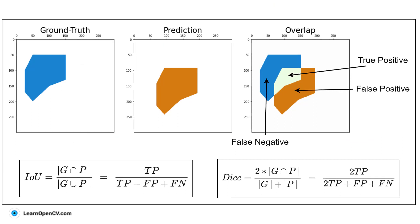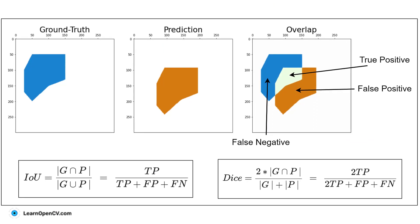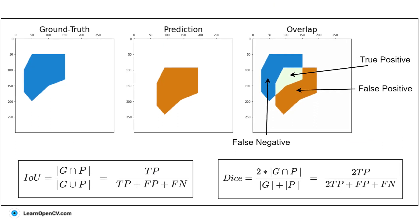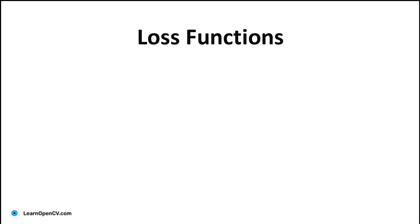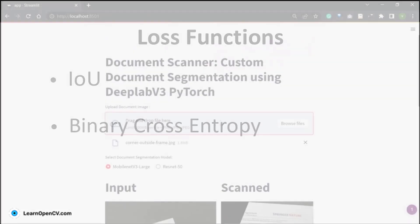IOU and DICE coefficient are widely preferred for segmentation tasks. Both of them can be used as either a loss function or evaluation metric. We will train using a combo loss of IOU and binary cross entropy, and track IOU as an evaluation metric.